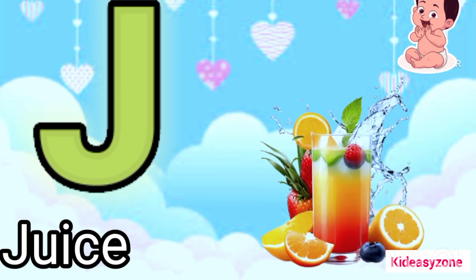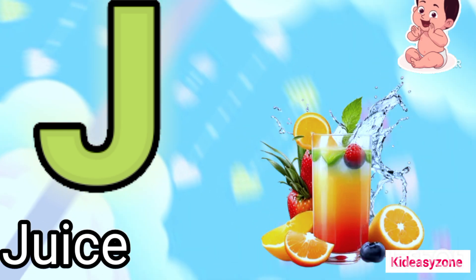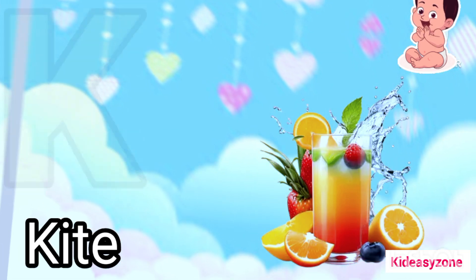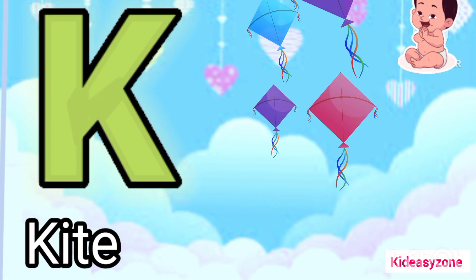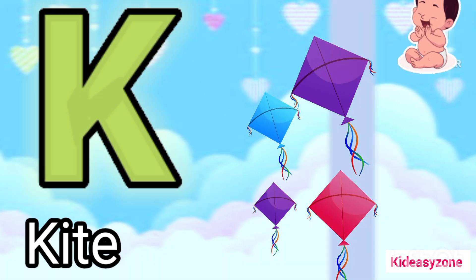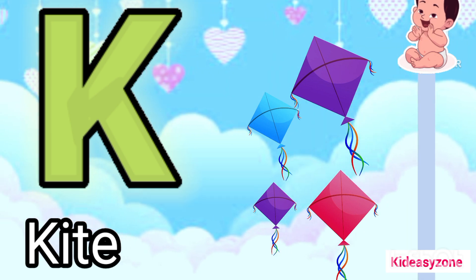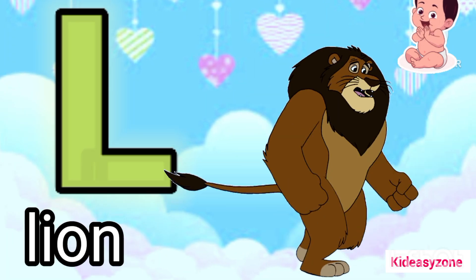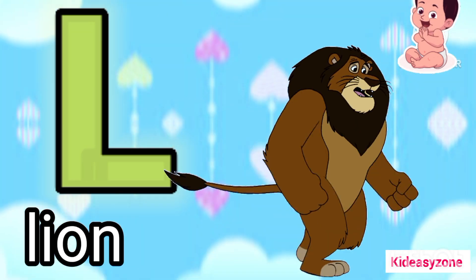J is for juice. K is for kite. L is for lion.